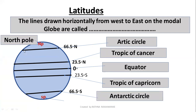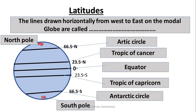North latitude 90 degrees is known as the North Pole. And south latitude 90 degrees is known as the South Pole.